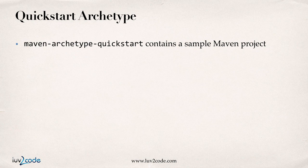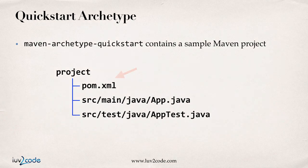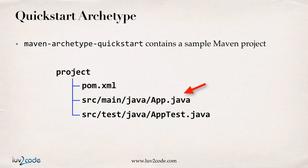Let's take a look at the Quick Start archetype. It contains a sample Maven project, good for standalone apps. It'll create a project directory for you, include a basic pom.xml file, give you a main application called App.java, and also give you a very basic JUnit test. These are the files generated for free when you use the Quick Start archetype.